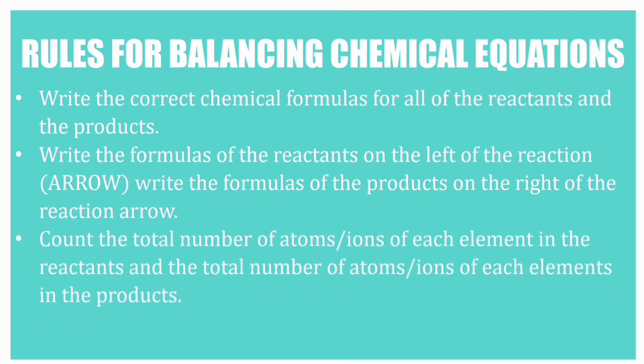Next, count the total number of atoms or ions of each element in the reactant and the total number of atoms and ions of each element in the product. A polyatomic ion that appears unchanged on both sides of the equation is counted as a single unit.